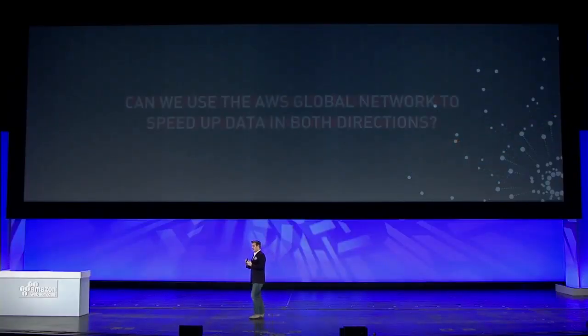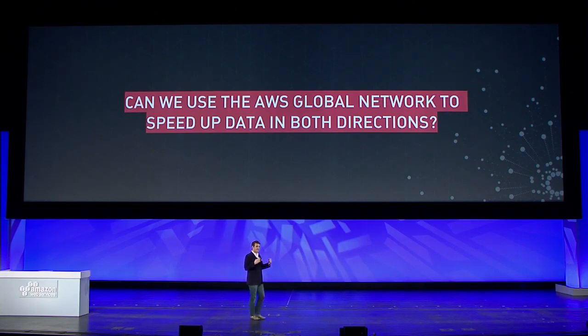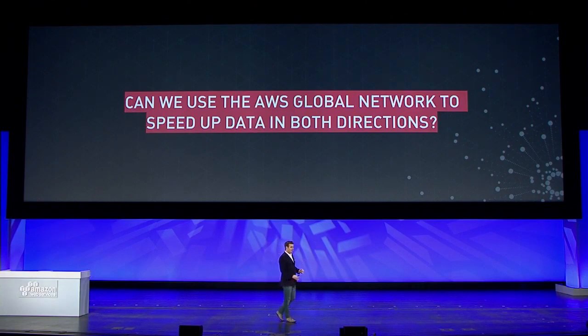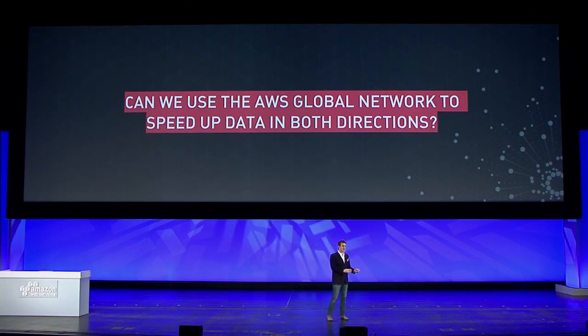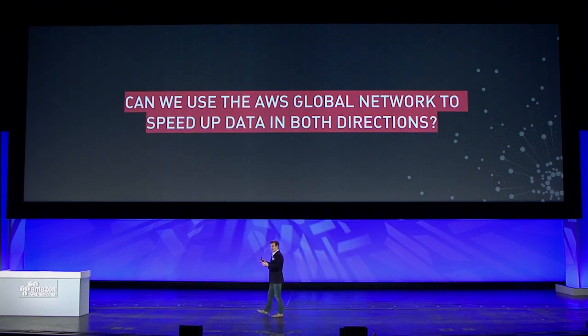And so we asked a pretty simple question. Given that we have this large edge network with CloudFront, which provides content delivery — so that is accelerated delivery down into the regions — can we use that exact same network in reverse, and use the edge network which CloudFront and Route 53, our DNS service, use, which are continually monitoring the state and routing traffic intelligently through the edge network to get as much movement through that network as possible?